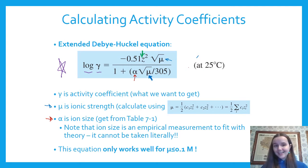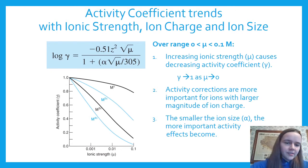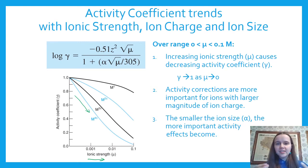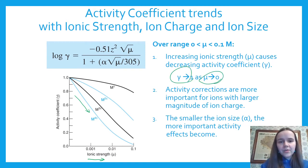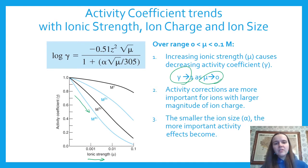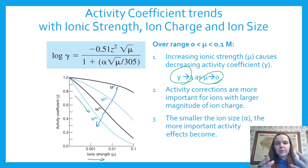Note that the left-hand side is log of gamma, so you'll have to undo the log. The trend from the Debye-Hückel plot: as ionic strength increases, the activity coefficient goes down. If ionic strength is near zero, the activity coefficient is near one. The greater the magnitude of the ion charge, the more the corrections for activity matter and the smaller the activity coefficient. Smaller ion sizes also have more important activity effects.